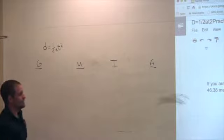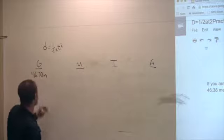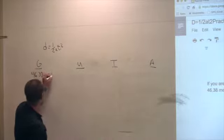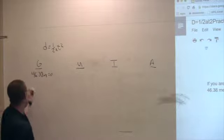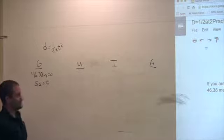So my given is 46.38 meters. And what is that? What variable? That's D. That's my distance, right? And then I am also given five seconds, and that is T.